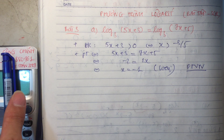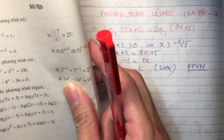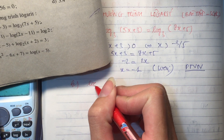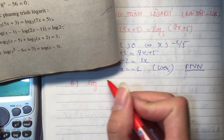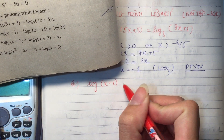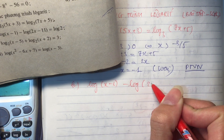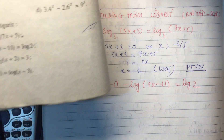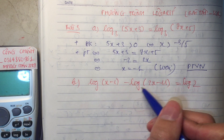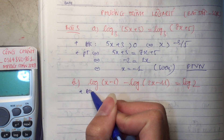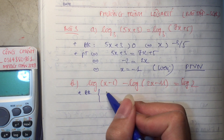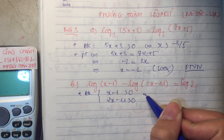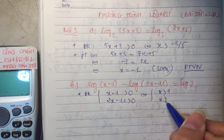Ta đến với câu B. Cái này là log cơ số 10, tức là đọc là 'lốc' đấy. Log cơ số 10 của x trừ 1, trừ đi log cơ số 10 của 2x trừ 11, bằng log cơ số 10 của 2. Bài này do 2 logarit cùng nằm ở 1 bên như thế này, nên chúng ta sẽ đặt cả 2 điều kiện: x trừ 1 lớn hơn 0 và 2x trừ 11 lớn hơn 0, dẫn đến x lớn hơn 1 và x lớn hơn 11 phần 2.